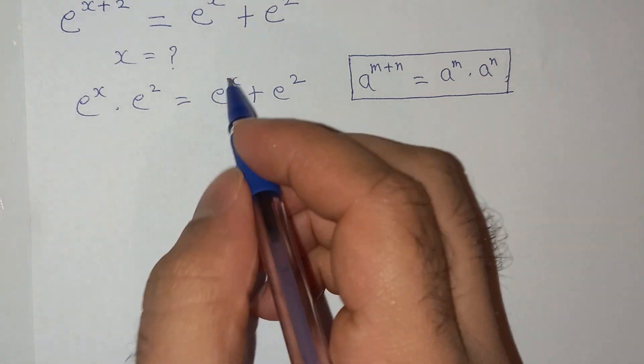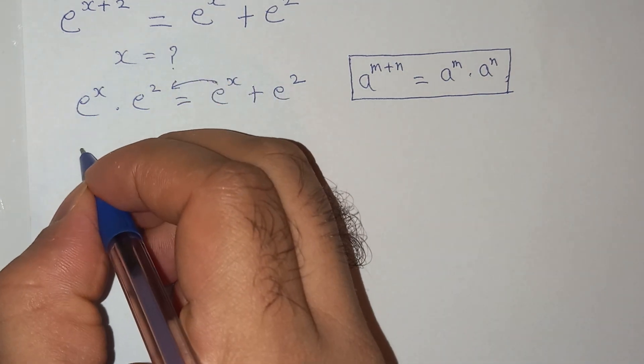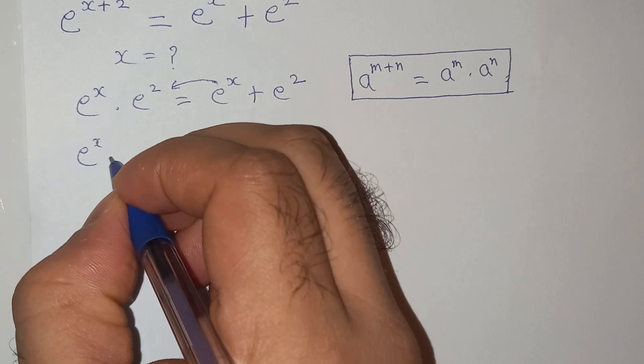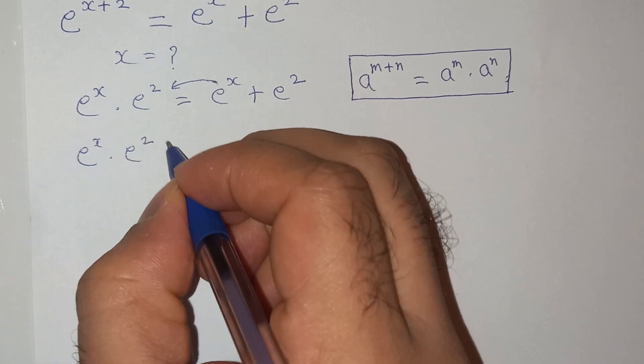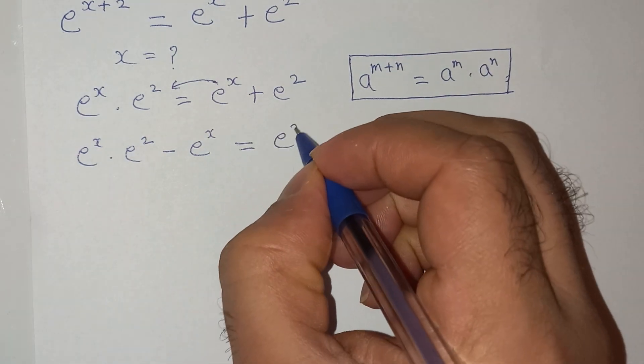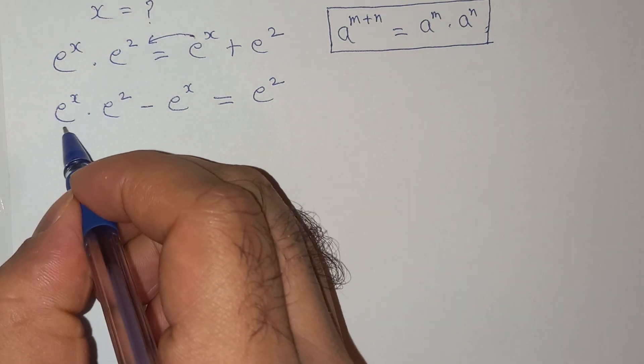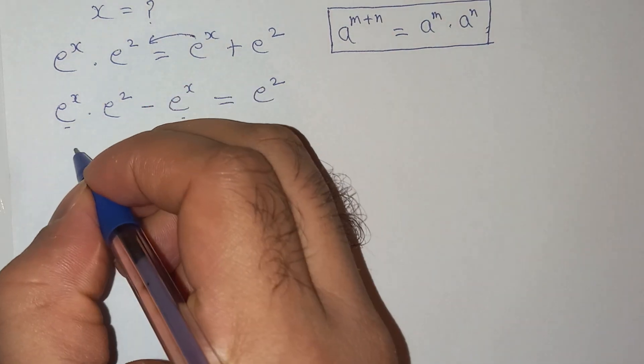Now let's take this e power x on the left hand side, so this will be e power x multiplied e square minus e power x equals to e square. Now as you can see, e power x is common so we can take it out.